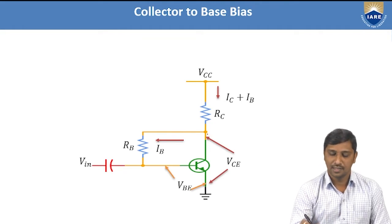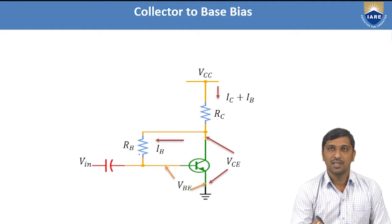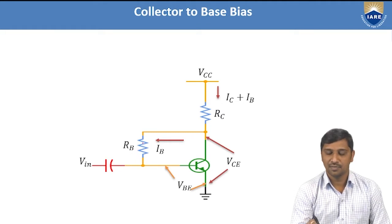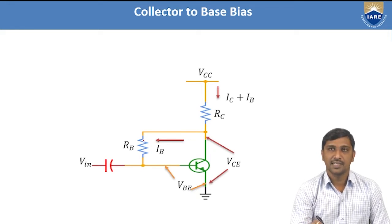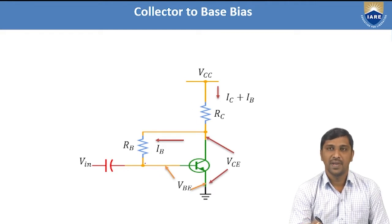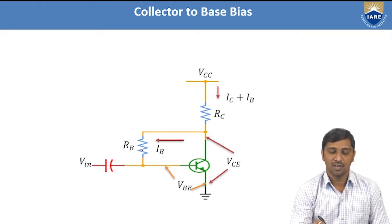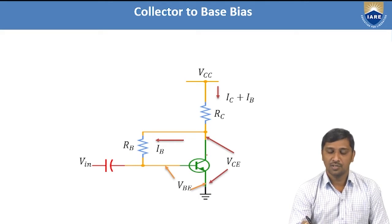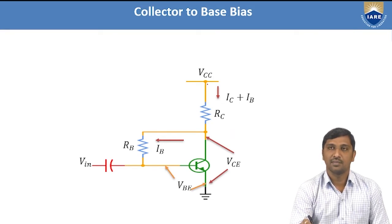That is the reason — the biasing resistance across the base terminal, represented as RB, is biased from collector to base. In fixed bias, this base resistance is directly biased from the constant VCC source. But in collector-to-base bias, as the name implies, we are biasing from the collector terminal to the base terminal through the biasing component — the base resistance. The collector is also biased with a collector resistance through the biasing source VCC.